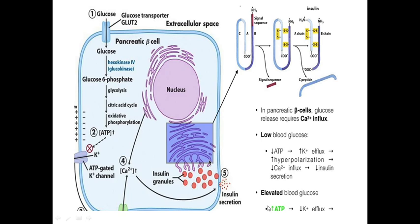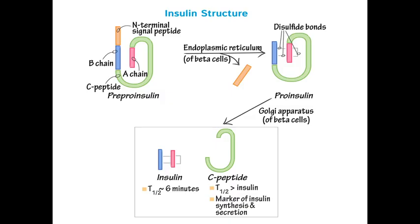Increased ATP production causes decrease in potassium efflux, which causes increasing insulin secretion. By the reverse, low blood glucose level decreases ATP production and increases potassium influx into the cell, which causes increasing hyperpolarization of the cell membrane and decreases insulin secretion. Insulin has a very interesting structure. Insulin consists of three chains: A chain, B chain, and C peptide. Proinsulin consists of A, B, and C chains, and after formation of insulin, insulin has two chains.